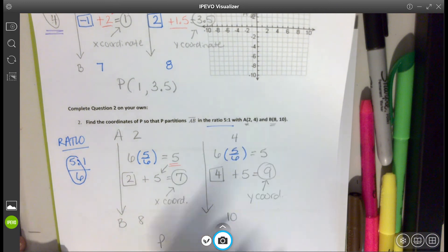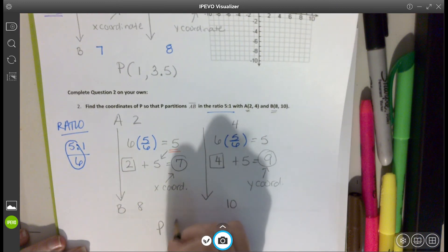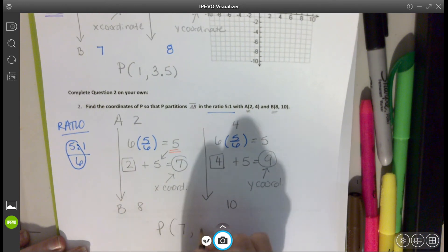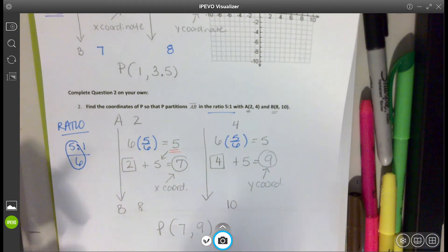So P, for this situation, would be 7, 9. All right, so that's how we find the partitioning of a directed line segment, finding that P-coordinate. All right, we're going to try some more problems in class. Talk to you guys soon.